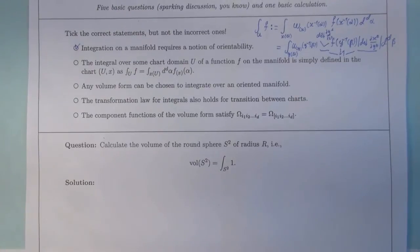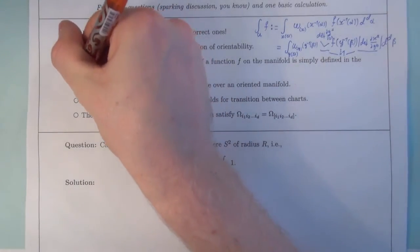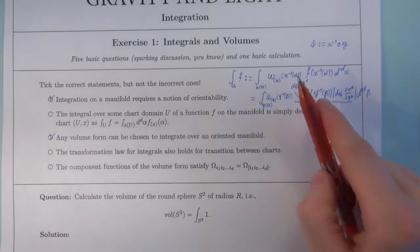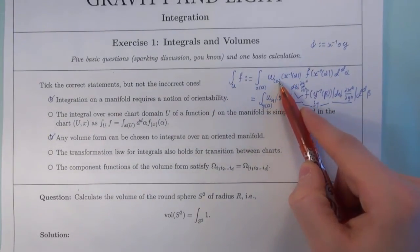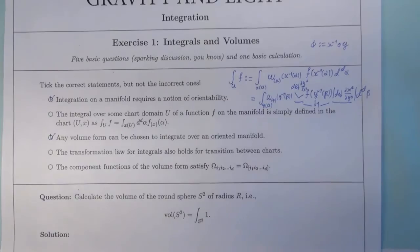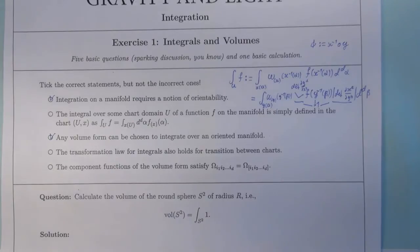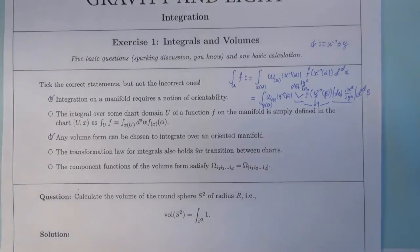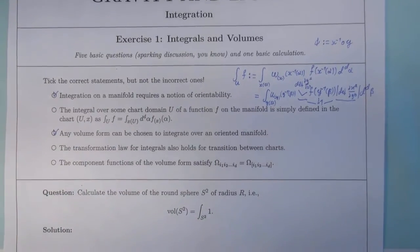Third, any volume form can be chosen to integrate over an oriented manifold. Well, this is certainly true. These objects omega, you can construct making use of a volume form. Later on, we choose a specific volume form, which you can construct out of the metric G, but any volume form does the trick. Of course, you have to provide this volume form, which is additional information, and if you already have a metric, so a metric manifold, you may just use this information and you don't need to give any further information in order to integrate functions.